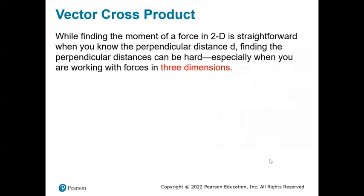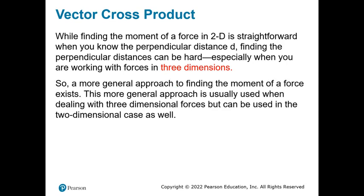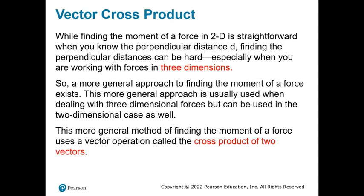Now we look into the vector cross product. Previously we used the dot product to find angles between two forces. Here we use the cross product. While finding moment in 2D is straightforward when the perpendicular distance is known, finding it in three dimensions is much harder. So a more general approach using the cross product of two vectors is used, applicable to both 2D and 3D cases.